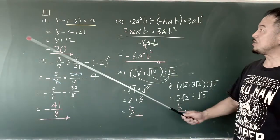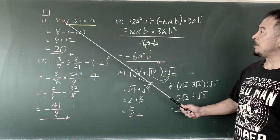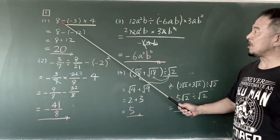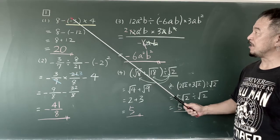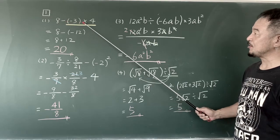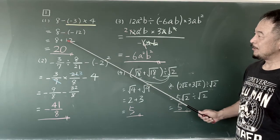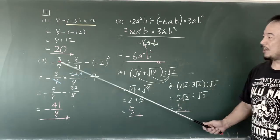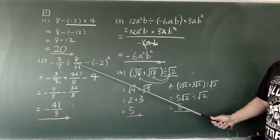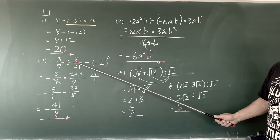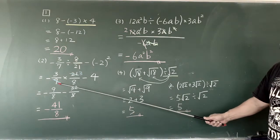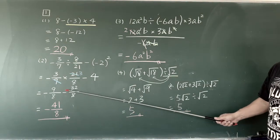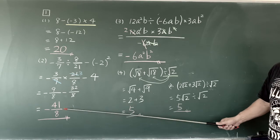解説します。1番、ここを先にやったら間違いますね。掛け算が先です。答え20。2番、ひっくり返して掛け算、約分、通分、答えですね。